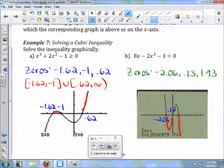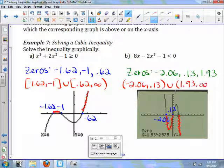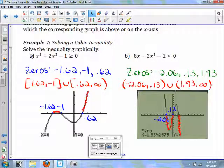So your answer will be negative 2.06 to 0.13 in union with 1.93 to infinity. Again, I use parentheses there because it is less than, not equal to.